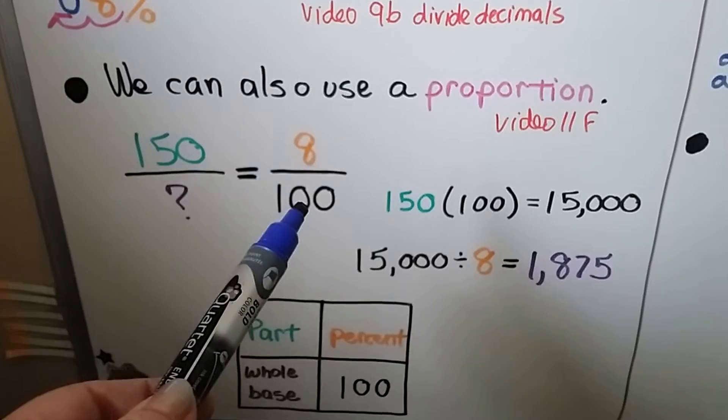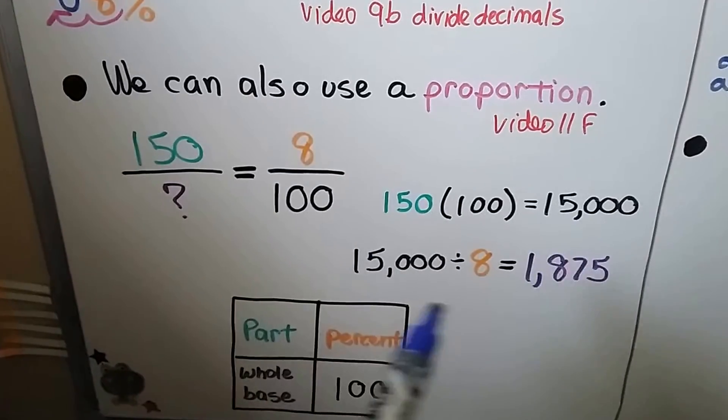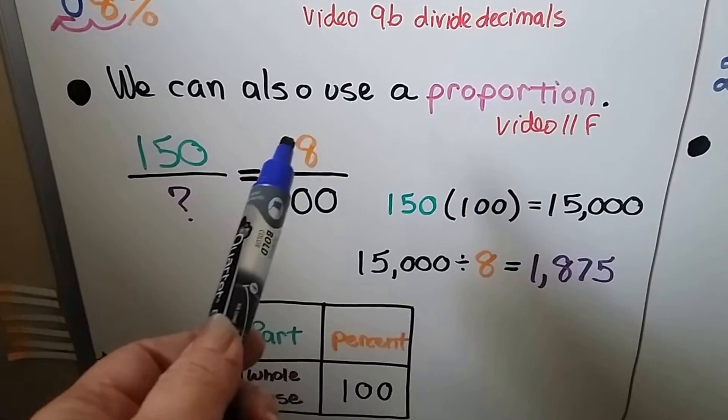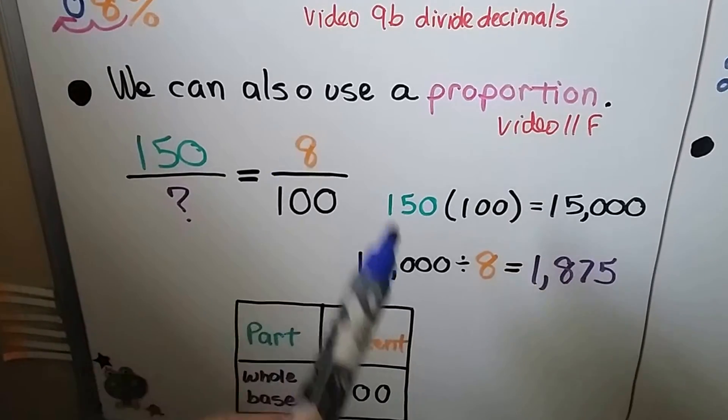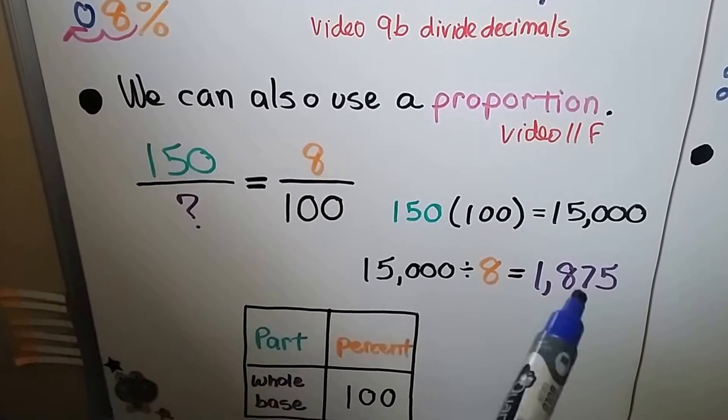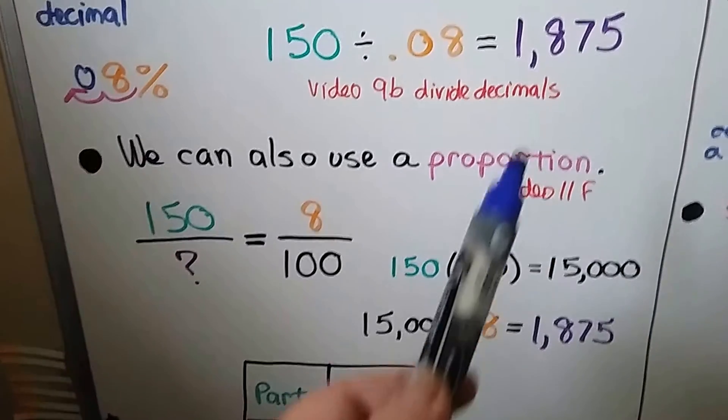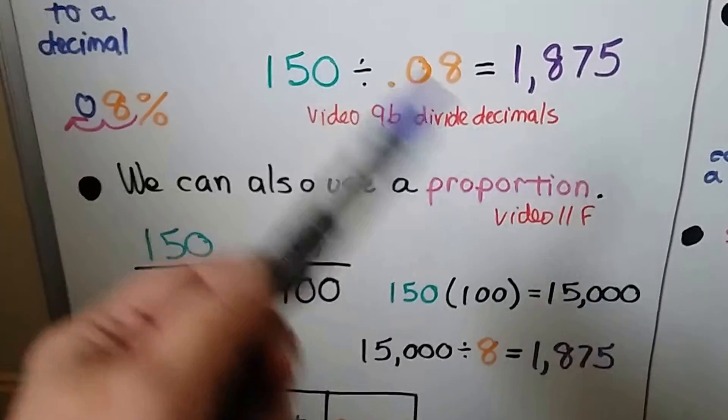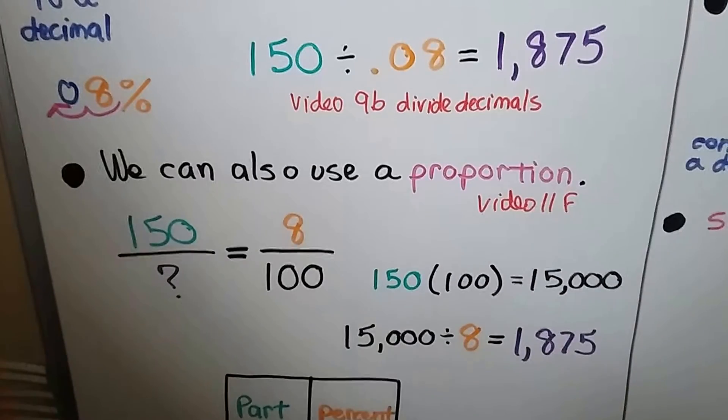We multiply 150 times 100. We get 15,000. And we divide it by the number that's remaining, the 8. The leftover third number. 15,000 divided by 8 is 1,875. Just like we got up here. So either way you do it, it's going to give you the right answer.